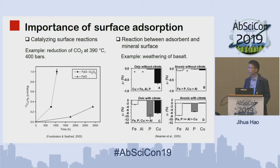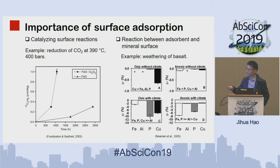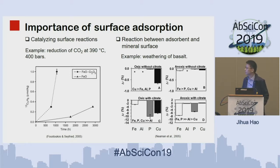There are also other important effects of surface absorption. For example, this study shows the reduction of carbon dioxide with or without chromium oxide — when chromium oxide is added, it can facilitate the reaction quite rapidly, reducing carbon dioxide for early synthesis. In another example, people studied the weathering of basalt with and without organic ligand. With organic ligand, probably by surface complexation, the release of phosphorus and copper is quite significant compared to without the ligand.